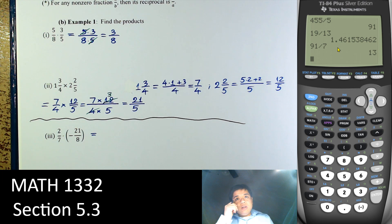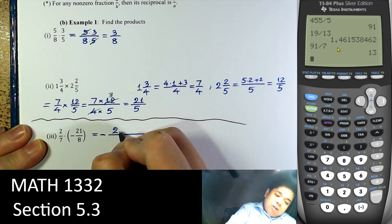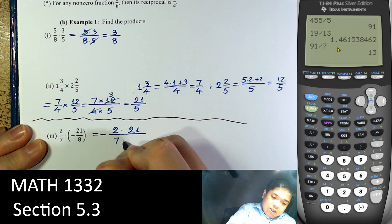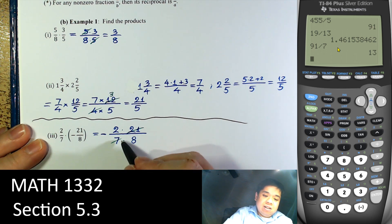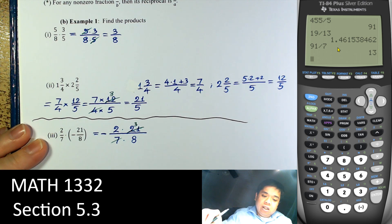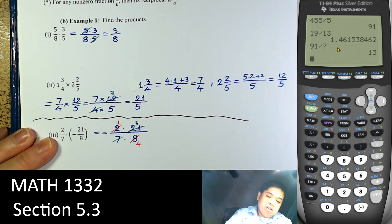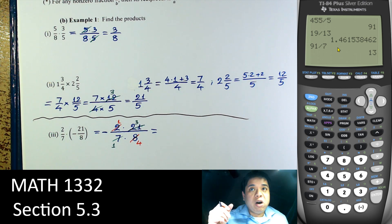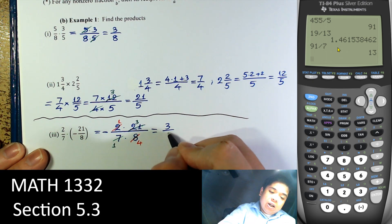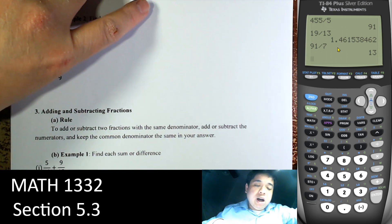This next example is just like what we did with integers — first check the signs. Opposite signs give a negative result. We have 2 times 21 over 7 times 8. Now 7 and 21 are both divisible by 7, so cancel to get 3. And 2 and 8 — divide by 2 — 2 becomes 1, 8 becomes 4. So we have 1 times 3 over 4, which is 3 over 4. It's much better to reduce before we multiply.